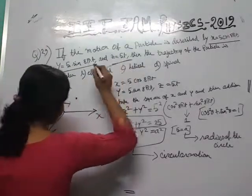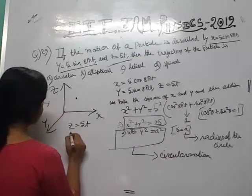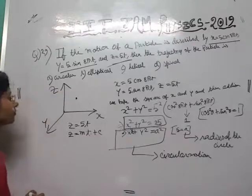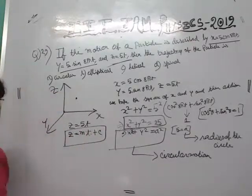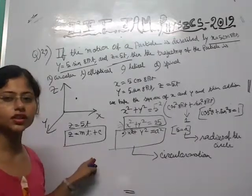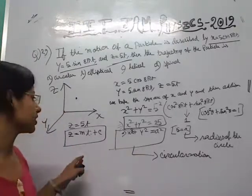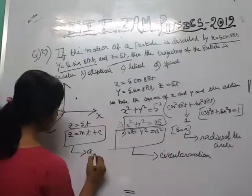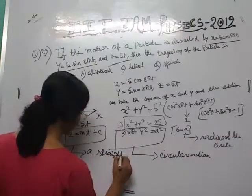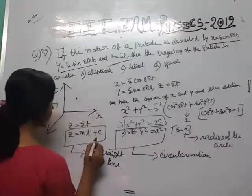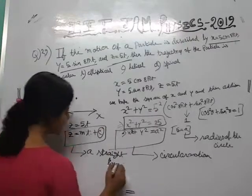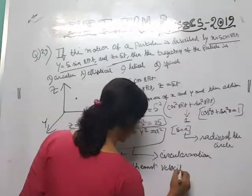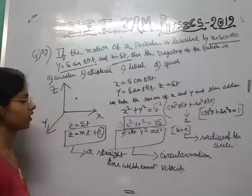The other coordinate is z equals to 5t. This is in the form of y = mx + c, so z = mt + c, which represents a straight line — specifically, straight line motion with constant velocity.